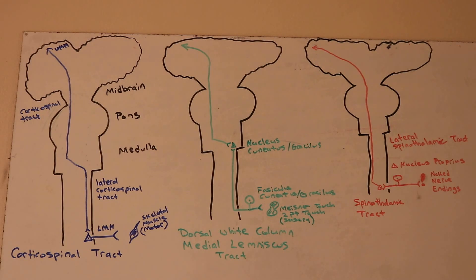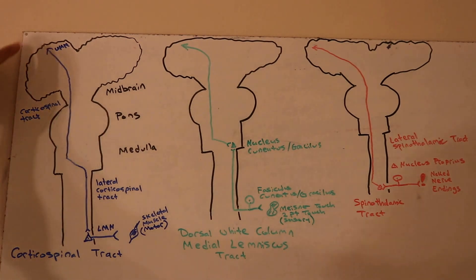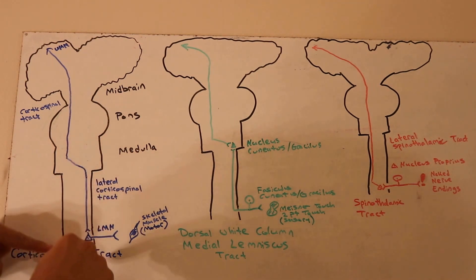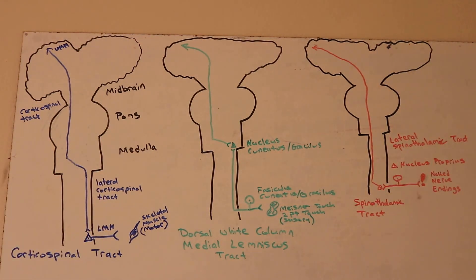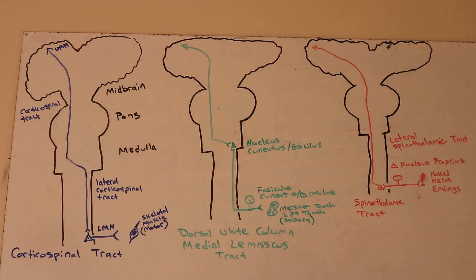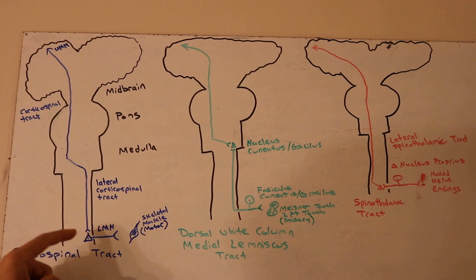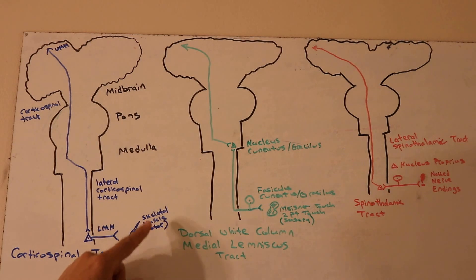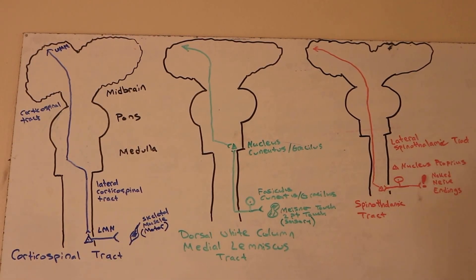Looking at the black outline: the fuzzy structure at the top is your cortex, then your midbrain, then your pons, then your medulla, and then your spinal cord. The upper motor neuron decussates — crosses over — at the pyramid of the medulla and goes down the lateral corticospinal tract. It then communicates with a lower motor neuron, whose cell body is in the spinal cord. Its axon exits the spinal cord at the appropriate spinal level to innervate the skeletal muscle and cause a contraction.